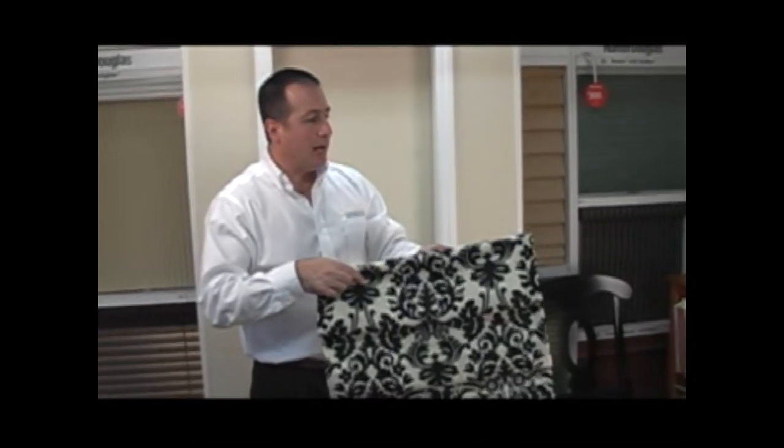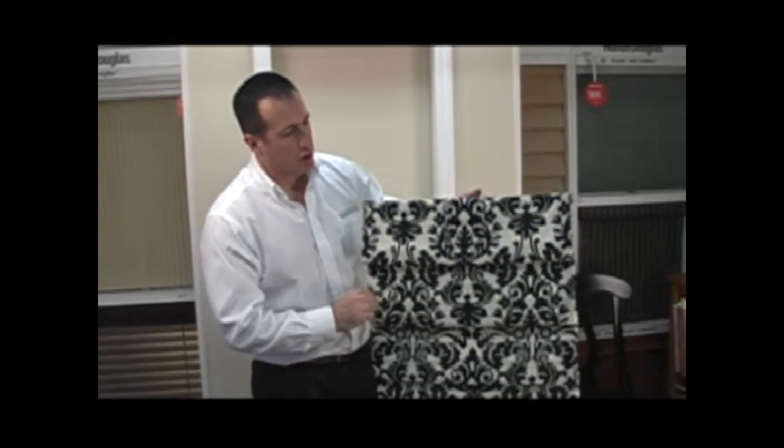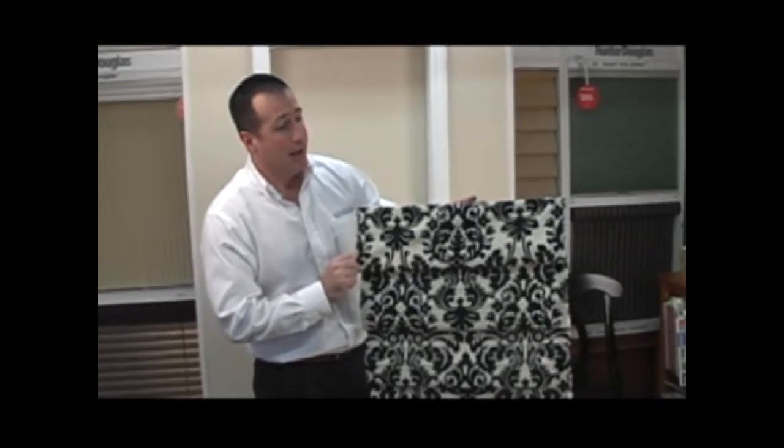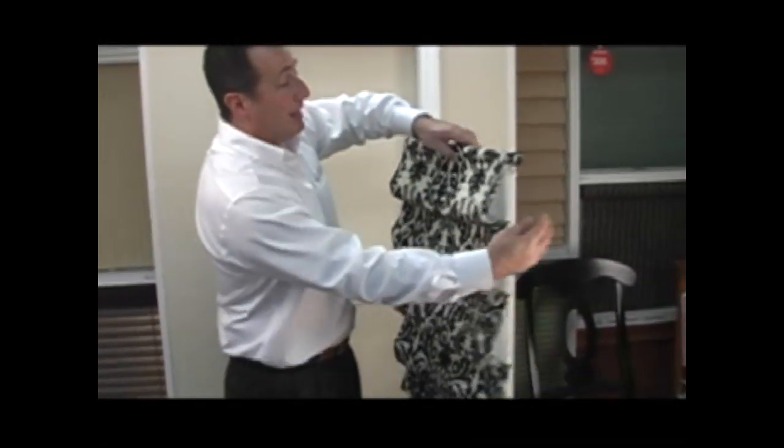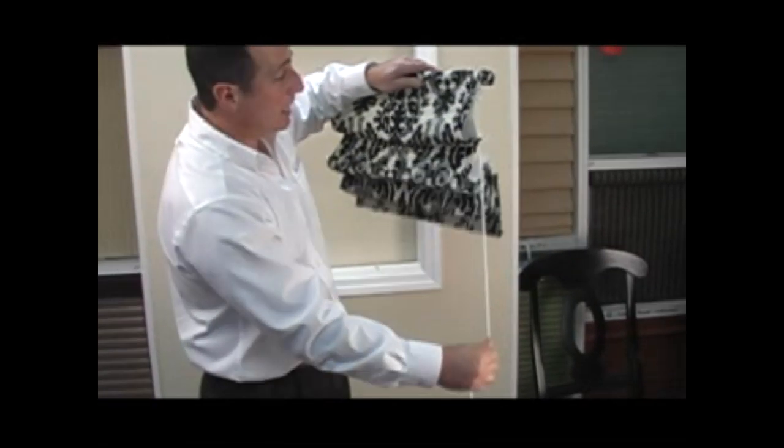Now we've gone through the different types of shades. This particular shade that we're showing you today is in the Essence pattern, Color Onyx. I'd like to show you how to install this shade if you had ordered the shade as an inside mount.